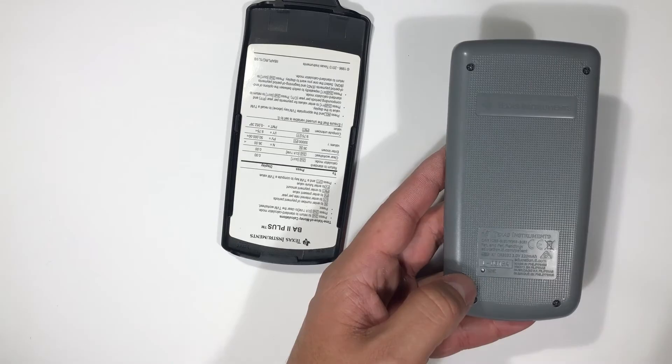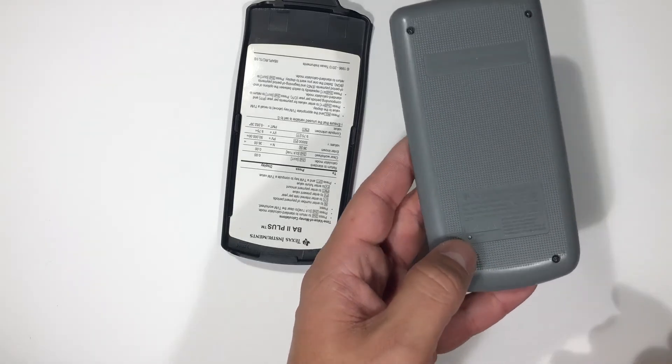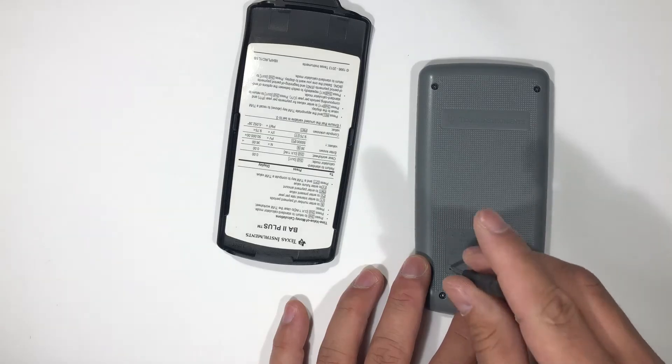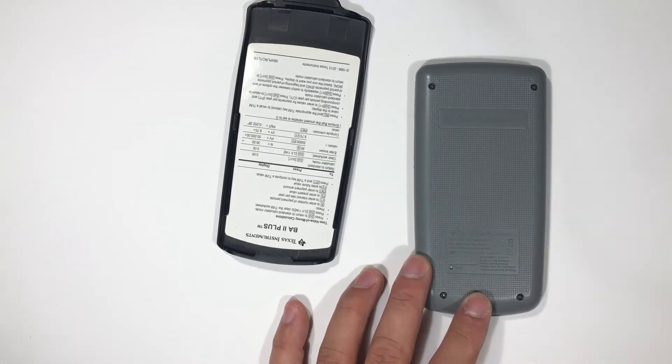Another way is the physical way to reset it. In the back there's a small little button right here. You get a small object that'll fit, press that little button, and it'll reset your calculator.